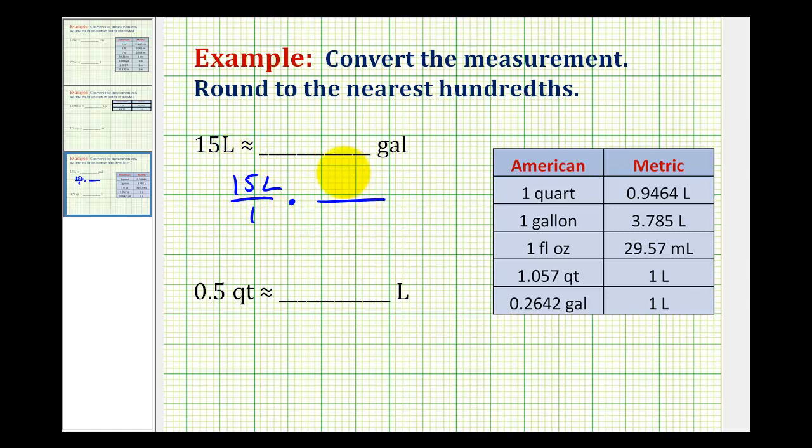We want a conversion from liters to gallons, and we actually have two choices. We have this conversion here, or we have this conversion here. It doesn't matter which one we use, but what does matter is that we have liters in the denominator, so it simplifies out with the liters here, and we have gallons in the numerator.